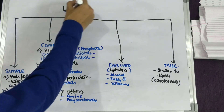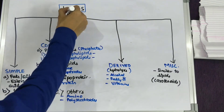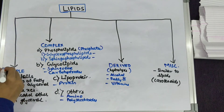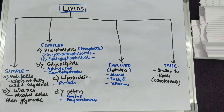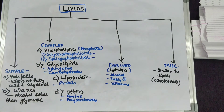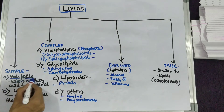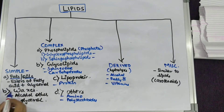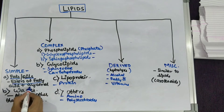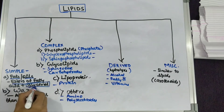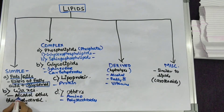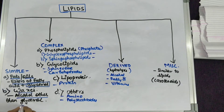Let's see the classification of lipids. Lipids are classified as simple lipids, which are further classified as fats or oils — esters of fatty acid which contain glycerol as the alcohol — and waxes, which are similar to fats or oils but contain an alcohol other than glycerol.